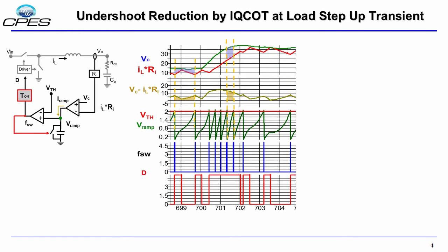Now let's see how the proposed IQ COT can reduce the undershoot at load step-up transient. When the T-on pulses come very close, they can merge together to produce a large T-on to increase the inductor current very quickly. This control naturally extends T-on.